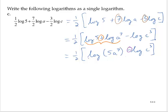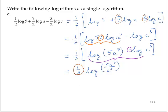With the subtraction, I can rewrite that as a single logarithm with a quotient. So I now have one half of log of 5a to the seventh over c to the third. I have a logarithm with a coefficient in front, so I can rewrite that coefficient as an exponent on the argument of the logarithm: the log of 5a to the seventh over c to the third, raised to the one half power.